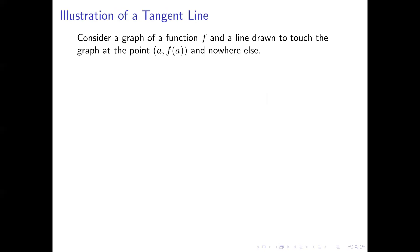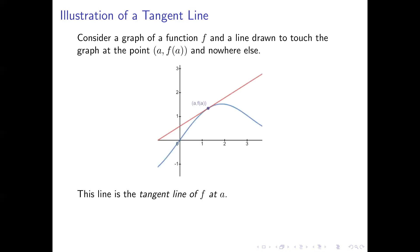Let's look at a tangent line. Say we have a function and its graph, and we have a line drawn so that it touches the graph of f at only a single point — call that point (a, f(a)). We have the graph of our function in blue, our point (a, f(a)), and our tangent line in red. Notice that the tangent line touches the graph at just that one point and then they diverge. That line is called the tangent line of our function f at a.